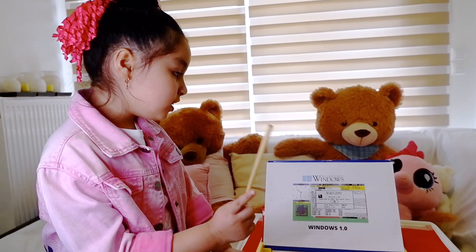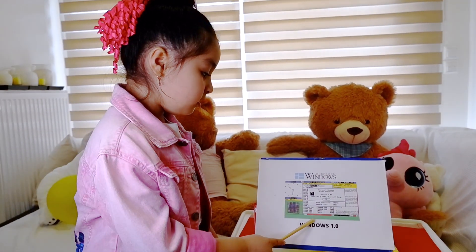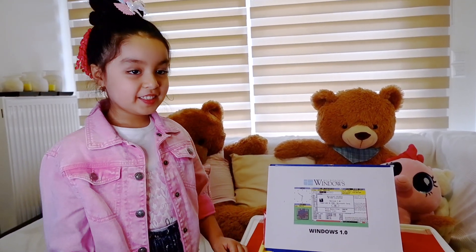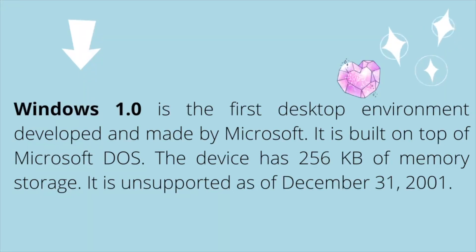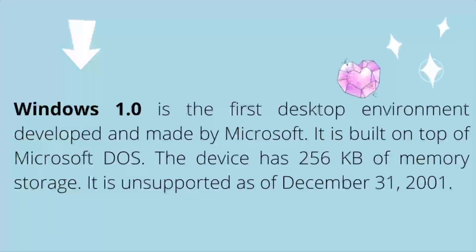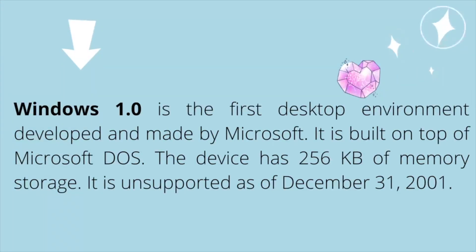The first one is Windows 1.0. Windows 1.0 is the first desktop environment developed and made by Microsoft. It's built on top of MS-DOS. This device has 256 kilobytes of memory. It became unsupported as of December 31, 2001.